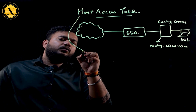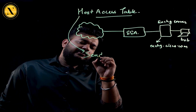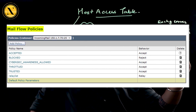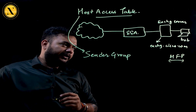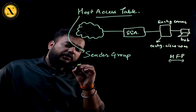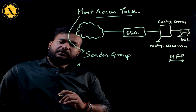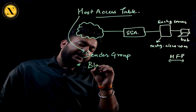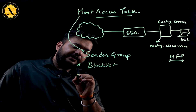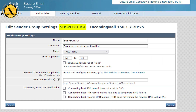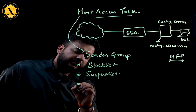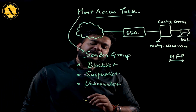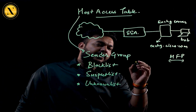The Host Access Table is segmented into two things: one is called a sender group and another is called a mail flow policy, denoted as MFP. By default there are three sender groups which are available and which work on the Sender Base Reputation Score — those are your blacklist, second is suspect list, and third is unknown list.